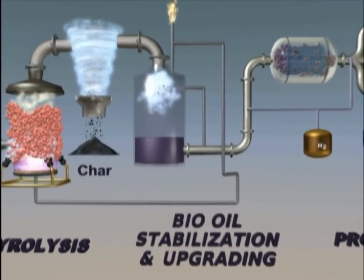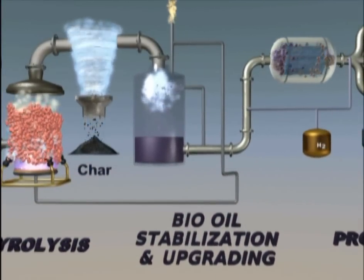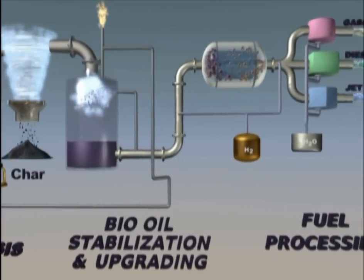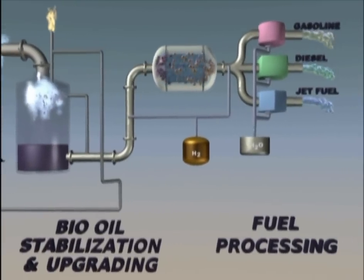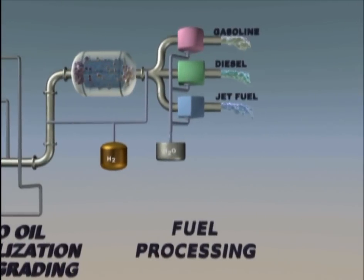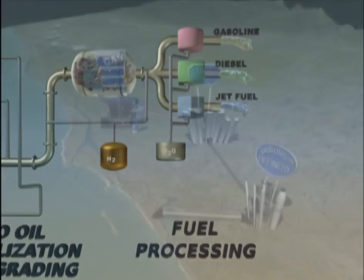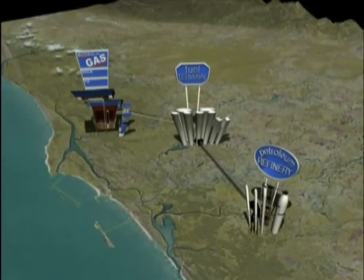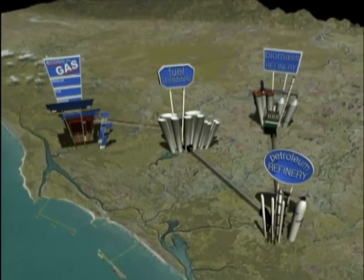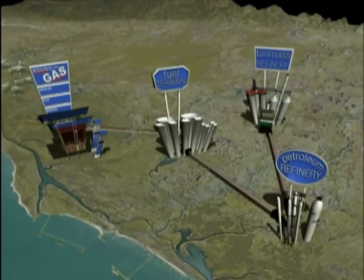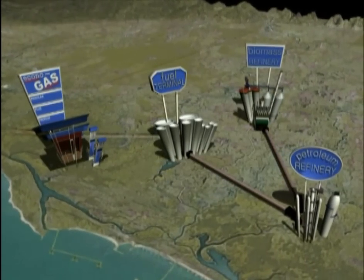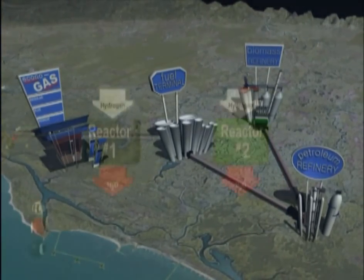Eliminating oxygen creates a less reactive bio-oil with lower acidity. The less reactive bio-oil may be stored longer and is more suitable for use as a fuel oil. The less acidic bio-oil may be more readily accepted into current infrastructure by achieving chemical compatibility with infrastructure materials such as pipes, reactors, and tanks.